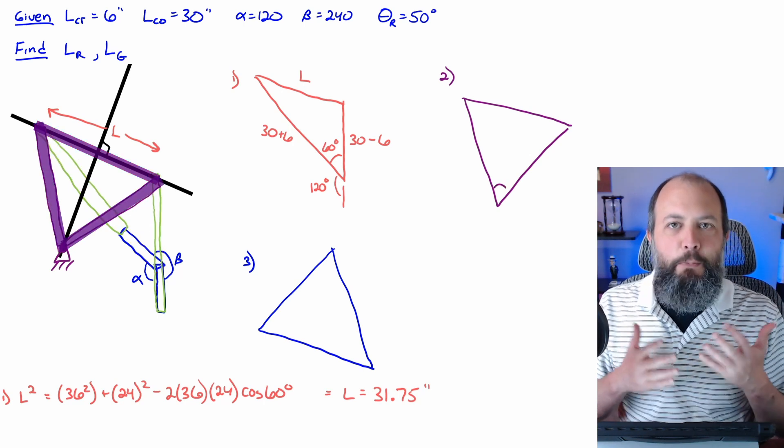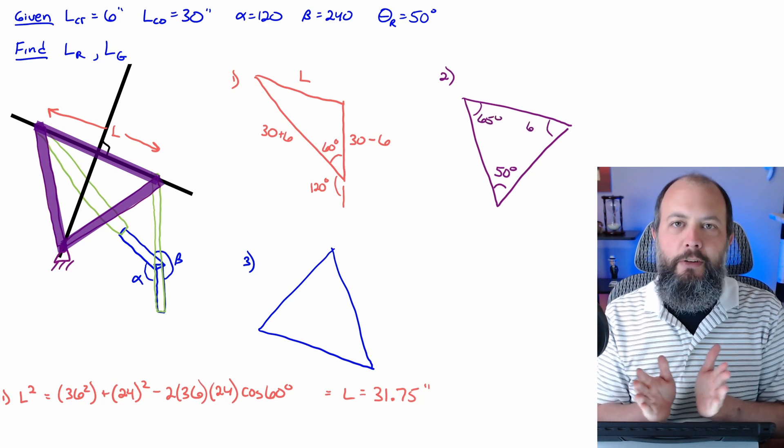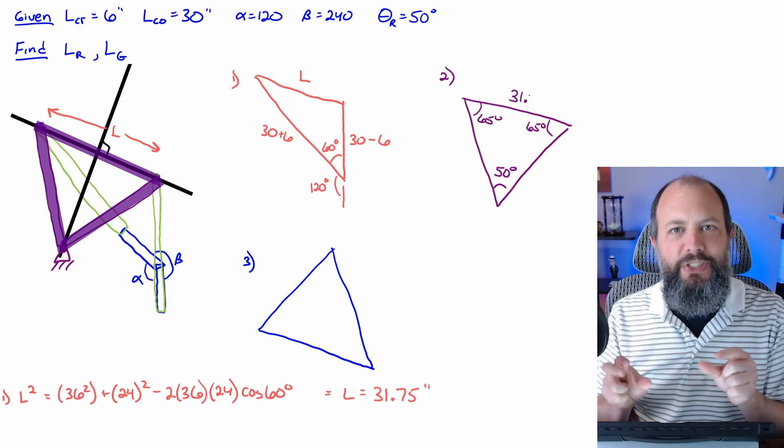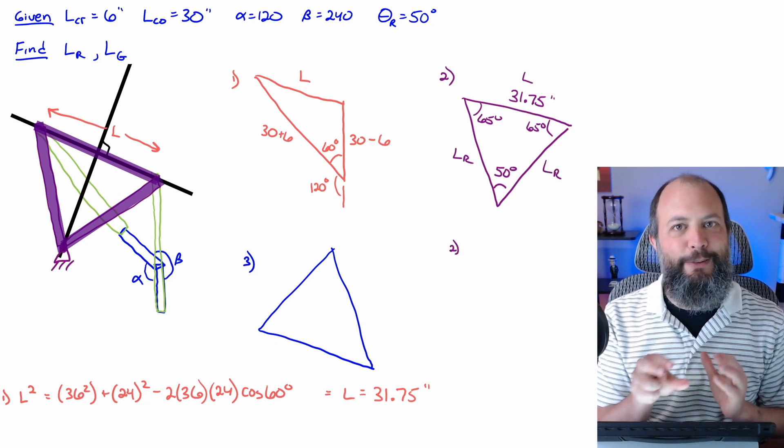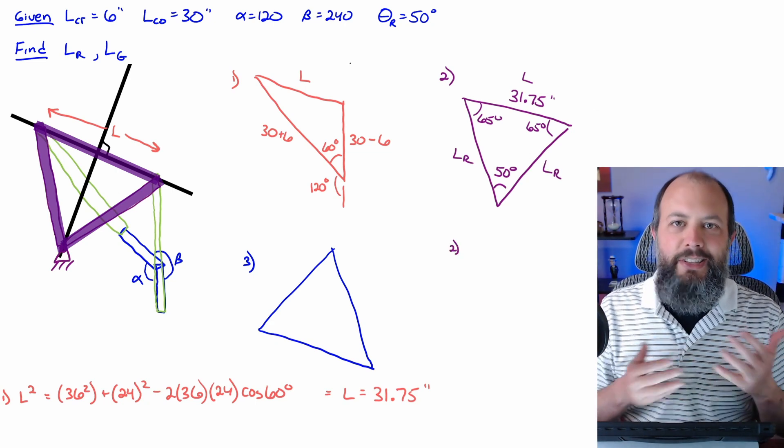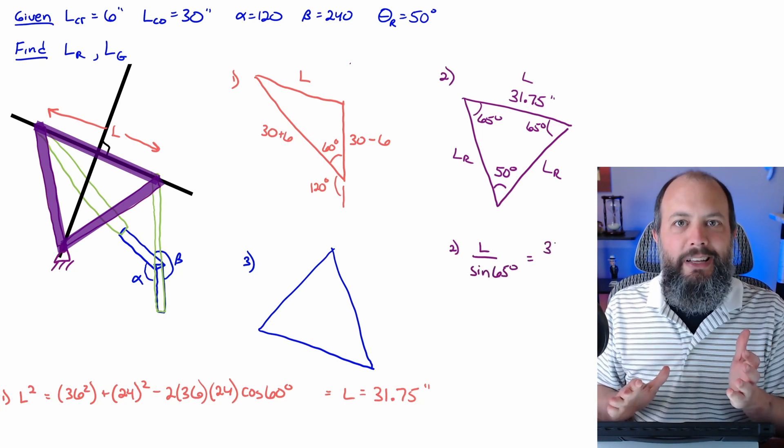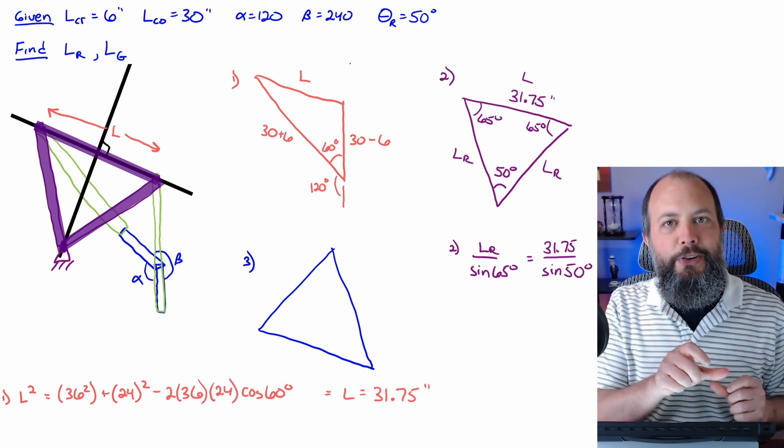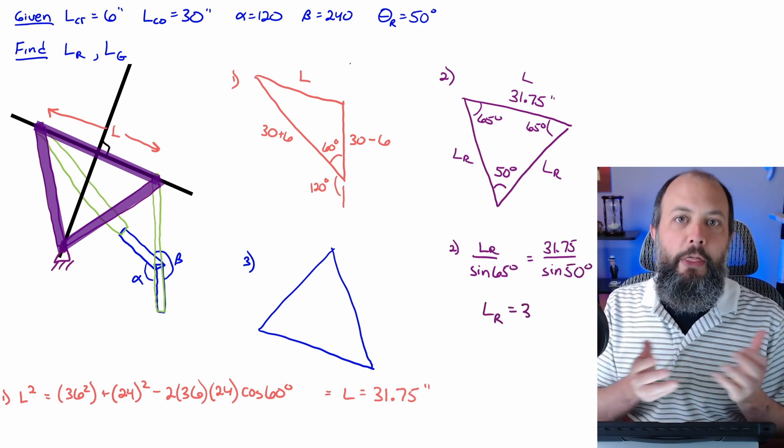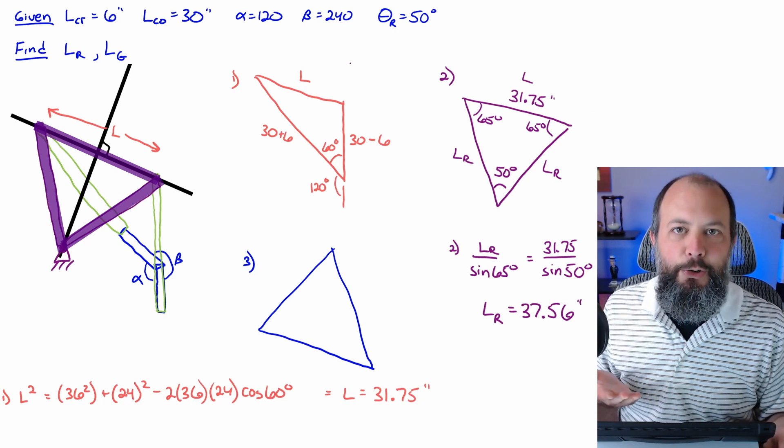Using the second purple triangle, which is an isosceles triangle with the length of the rocker on the two equal sides, and the base of that triangle is that value L that you found using the first red triangle. Since this is an isosceles triangle with 50 degrees in the middle, and you know that all three sides have to add up to 180 degrees, you get the other two angles: 180 degrees minus this 50 is 130, which is split equally amongst those two. That's how you get the 65 degree angles.